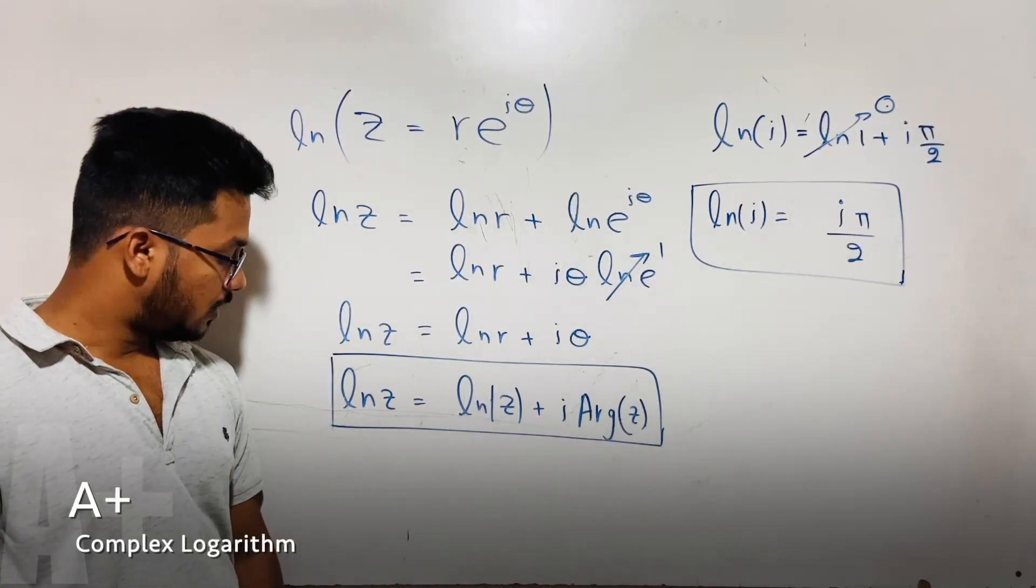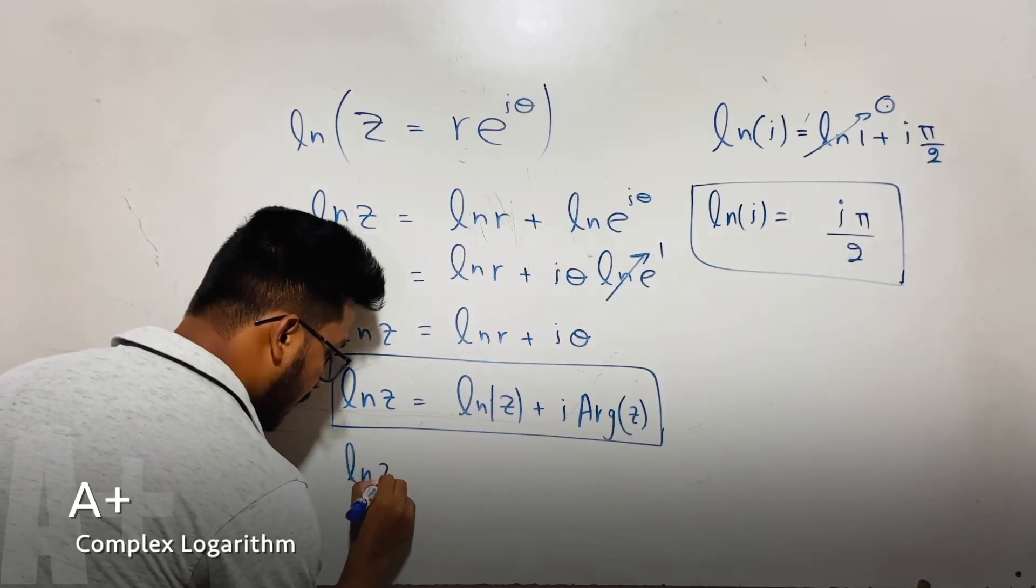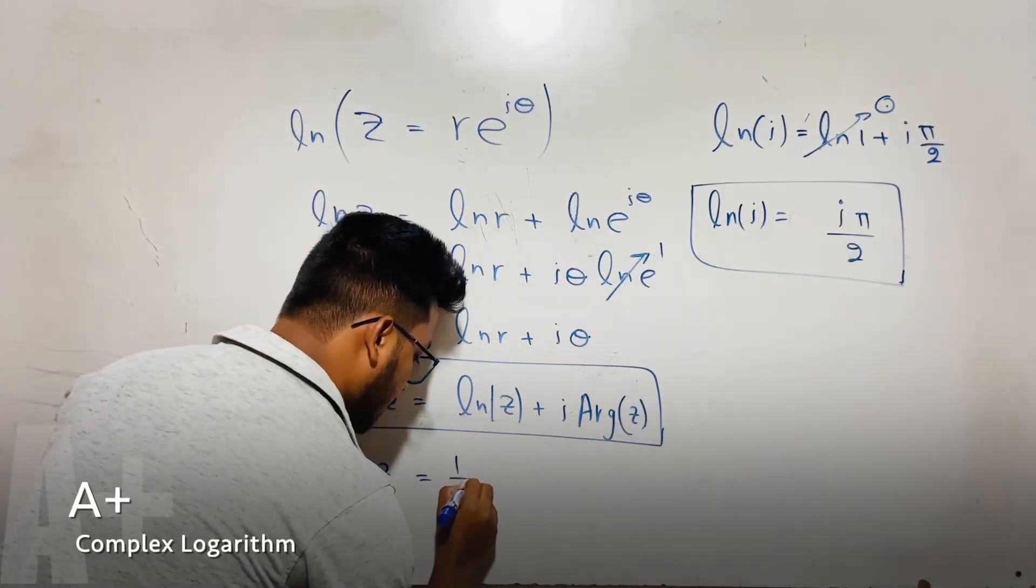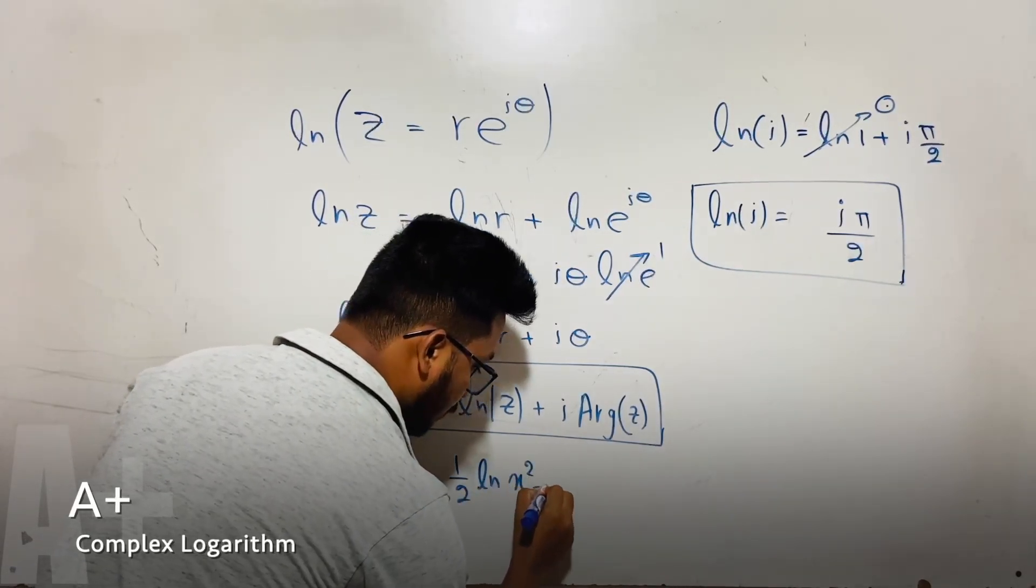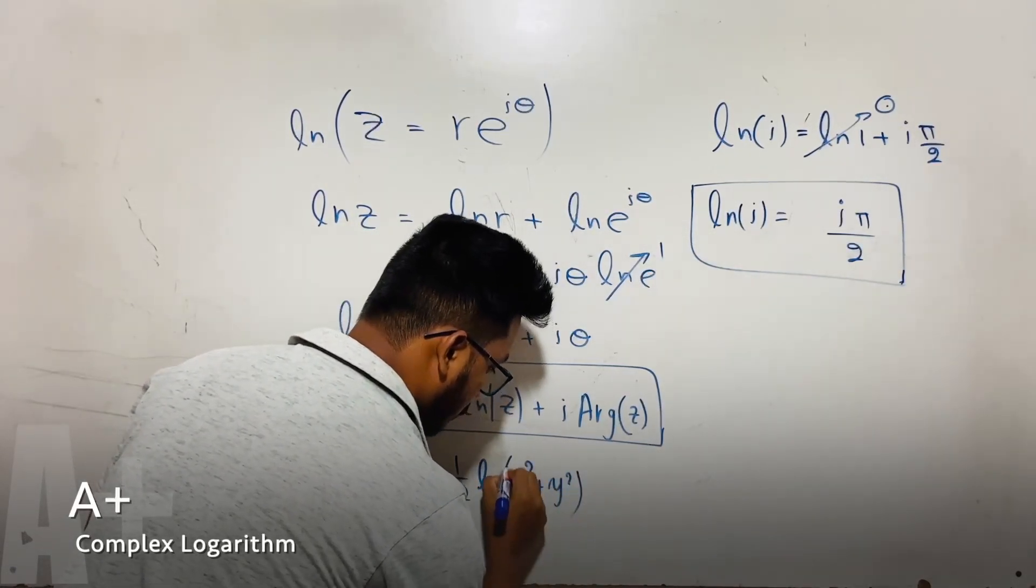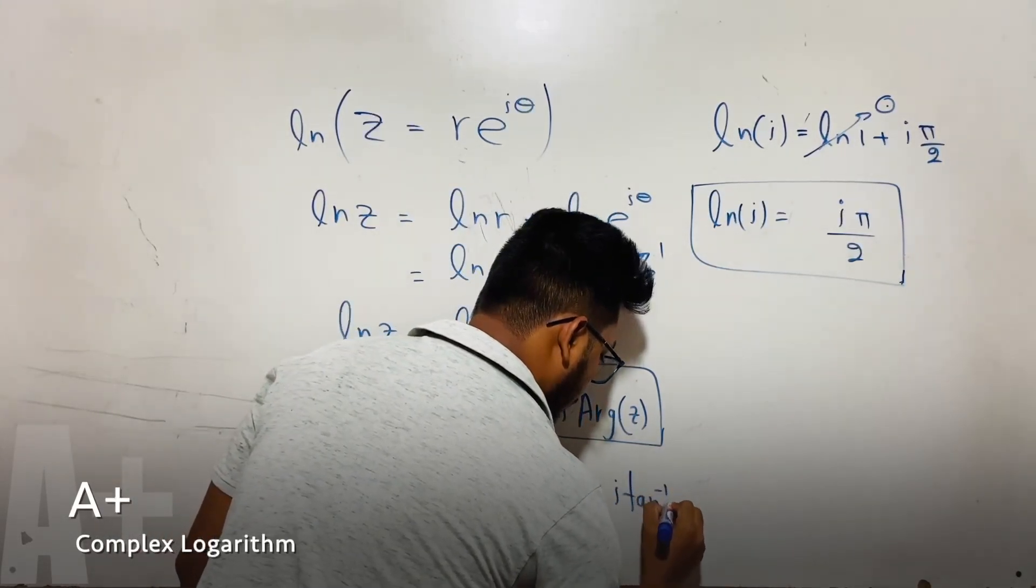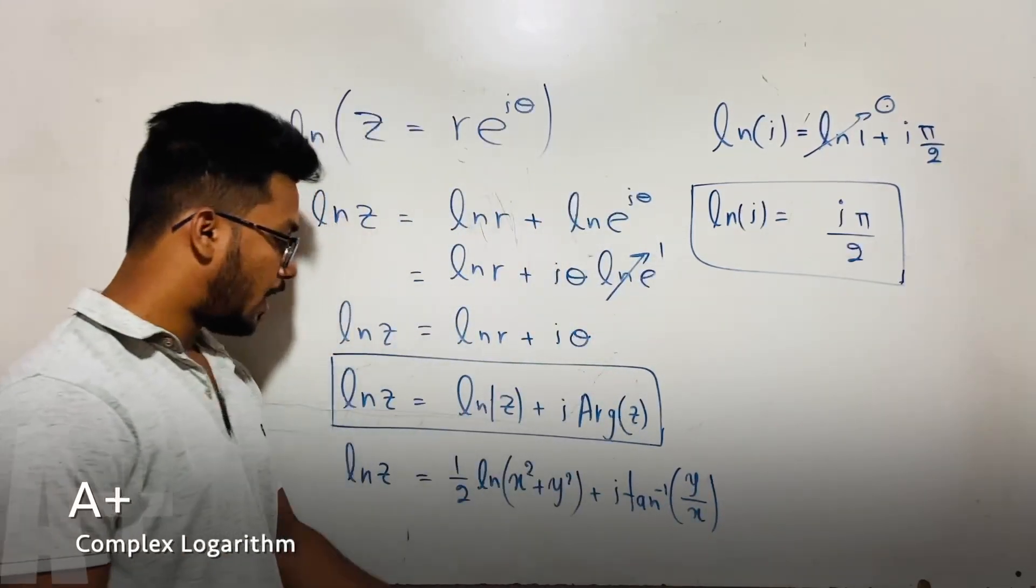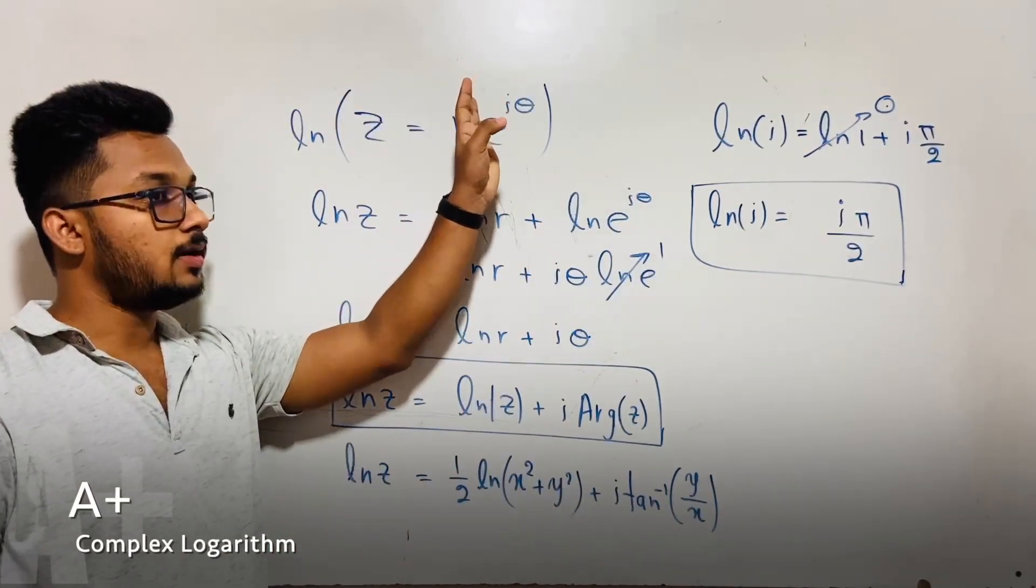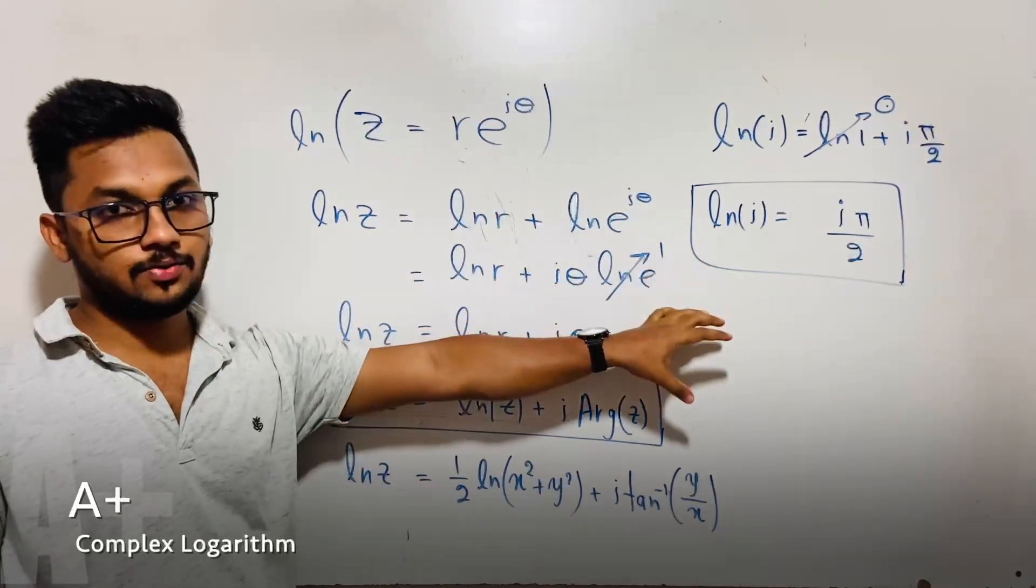And also we can use this equation: ln z equals 1 by 2 ln (x squared plus y squared) plus i tan inverse (y over x). If we have a complex number in general form, coordination form, we can use this equation also.